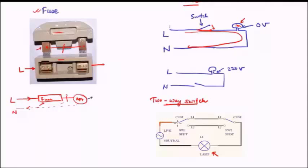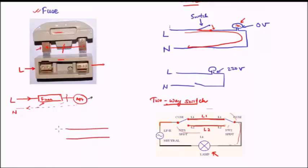Let us look specifically at the two-way switch section. There are two continuation paths for the live wire — one is called L1 and the other is called L2. Suppose the first switch is connected to L1 and the second switch is connected to L2 — what will happen is that there is a discontinuation and the current will not flow. Therefore this scenario is equal to the system being switched off, and the lamp will not glow. Similarly, if L1 is brought down to L2 on one side and the other is brought to L1, again the circuit is not complete — there is a discontinuation. So we can switch off either by moving the first switch or by moving the second switch.